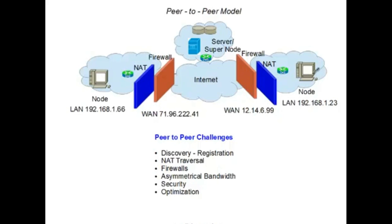NAT traversal is again an issue, and it's even more of an issue in peer-to-peer because there are two NATs and two firewalls that have to be traversed. Asymmetrical bandwidth is also more of an issue in this model. In the client-server model, content was coming from the server to the host. Here, content flows from the node across the internet, which means the upstream bandwidth of the node will be taxed.